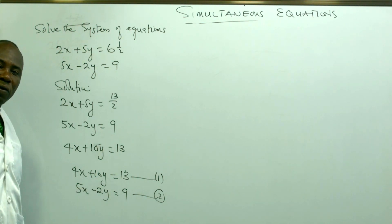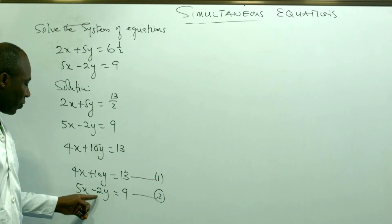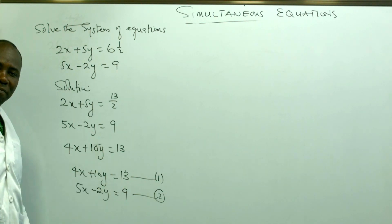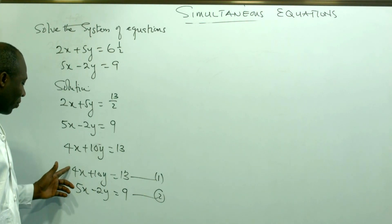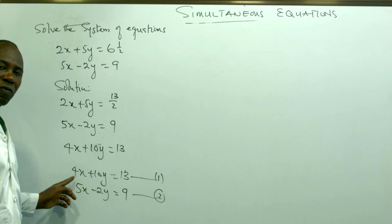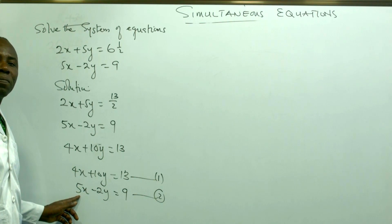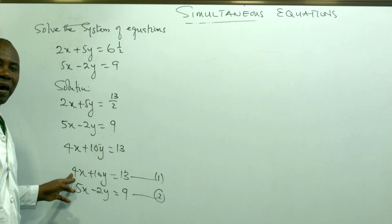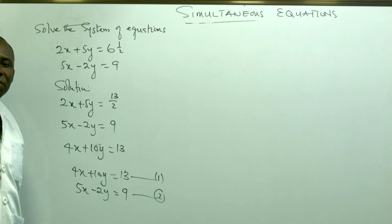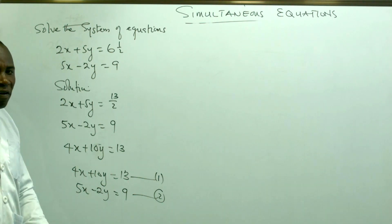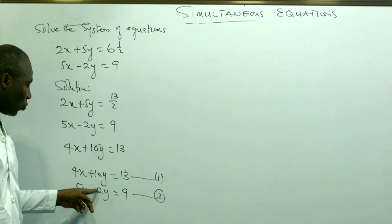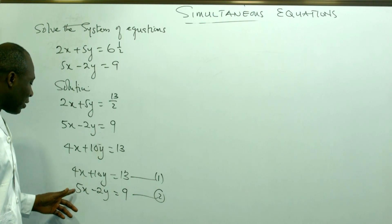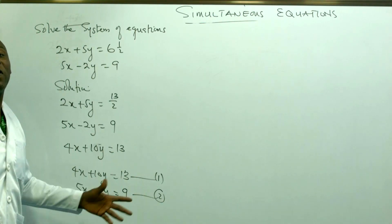Since 2 is a factor of 10, 2 can go into 10 five times. So I am going to multiply equation 2 by 5 so the coefficients will be the same. If instead someone wanted x to go, the coefficient of x in equation 1 is 4 and in equation 2 is 5 — neither is a factor of the other — so you would multiply equation 1 by 5 and equation 2 by 4, both giving coefficient 20. You get the same answer either way.